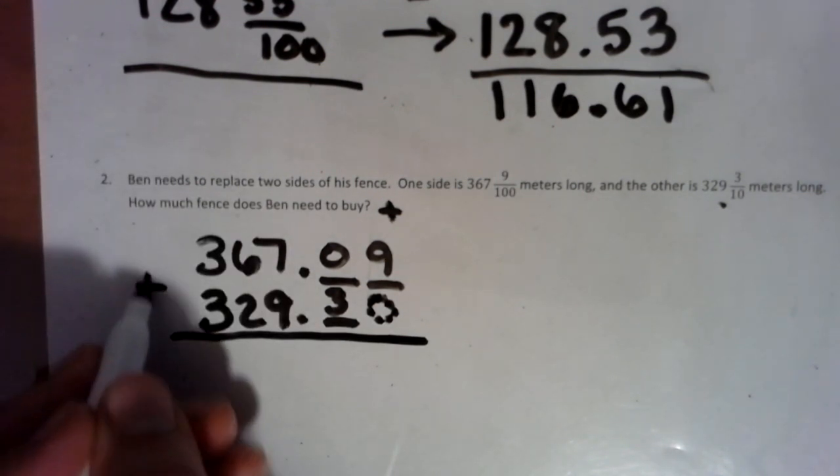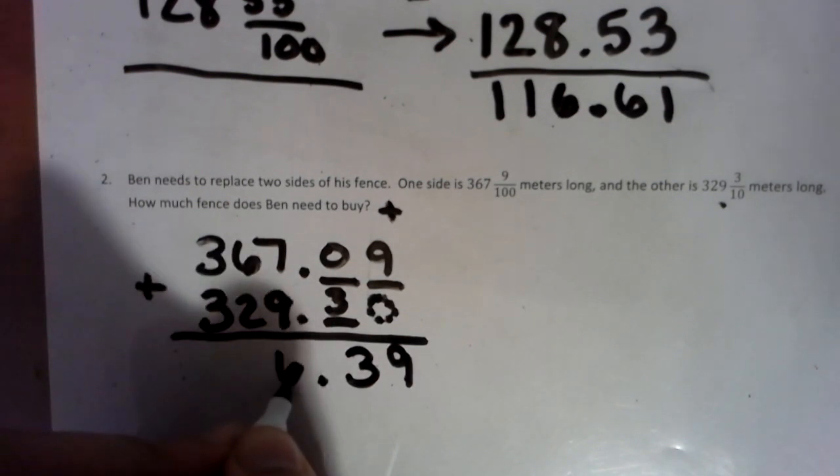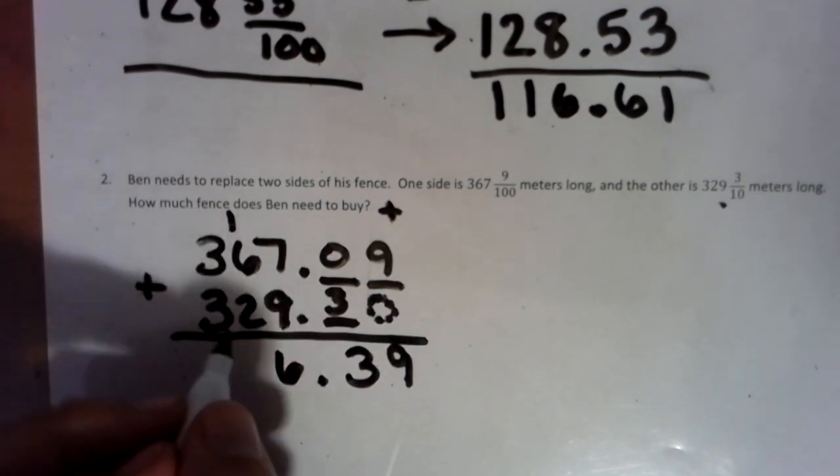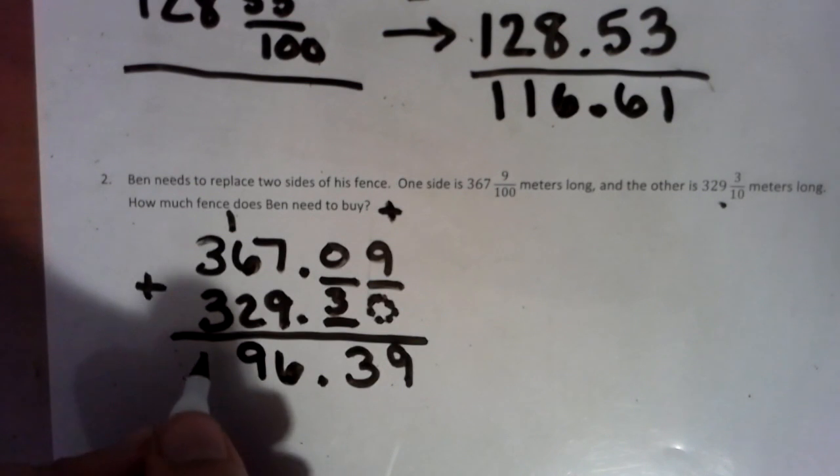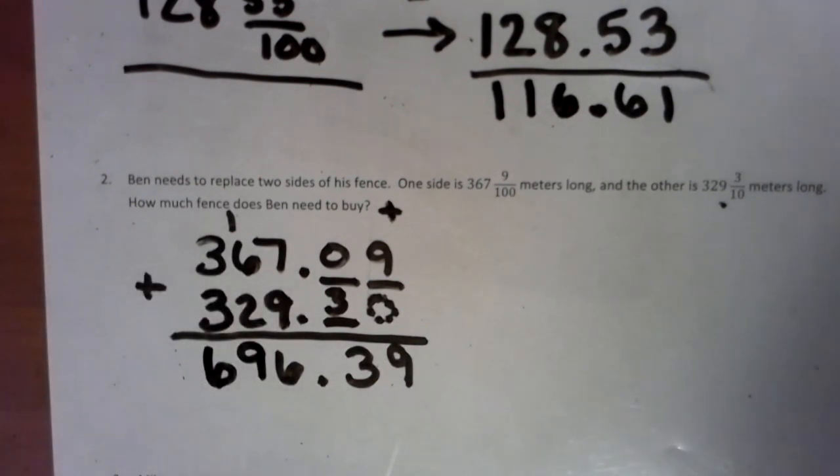All right. So we are adding 9 plus 0 is 9. 3 plus 0 is 3. 9 plus 7 is 16. Carry the 1. 6, 7, 8, 9. And 3 plus 3 is a big 6. That is your final answer.